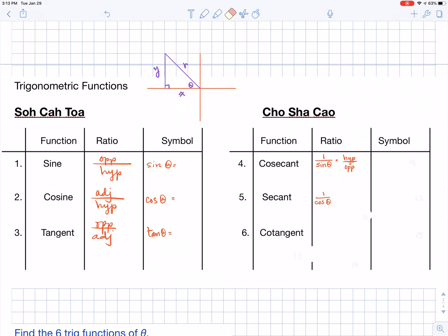Secant is going to be one divided by cosine. Again, the reciprocal of cosine. The reciprocal of cosine is going to be hypotenuse over adjacent.